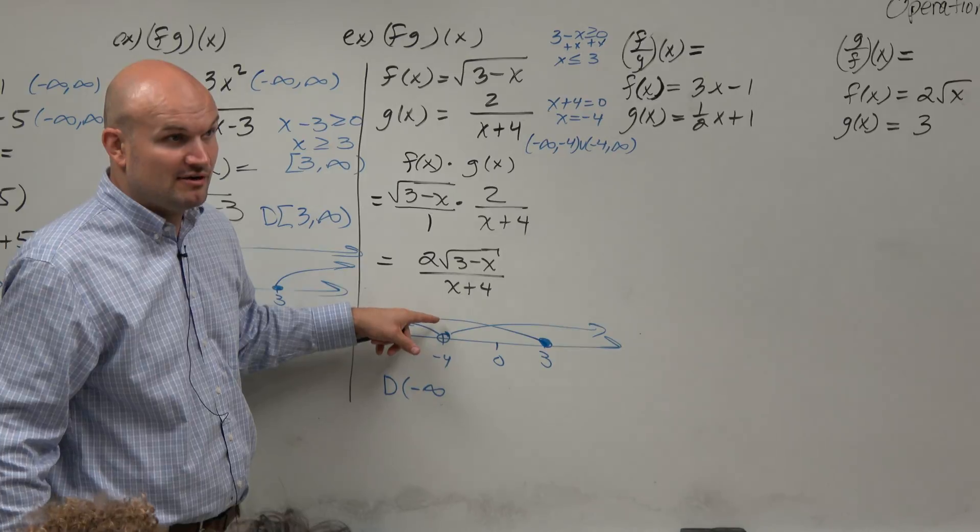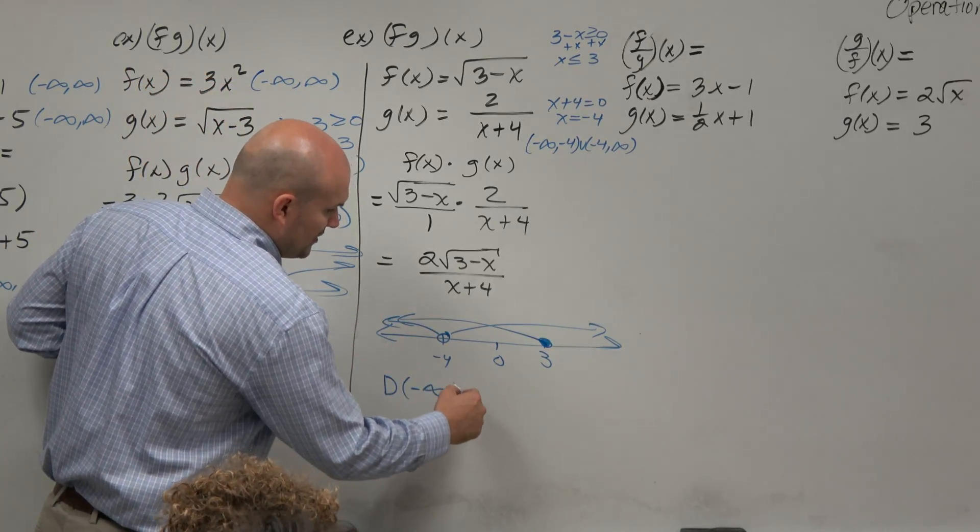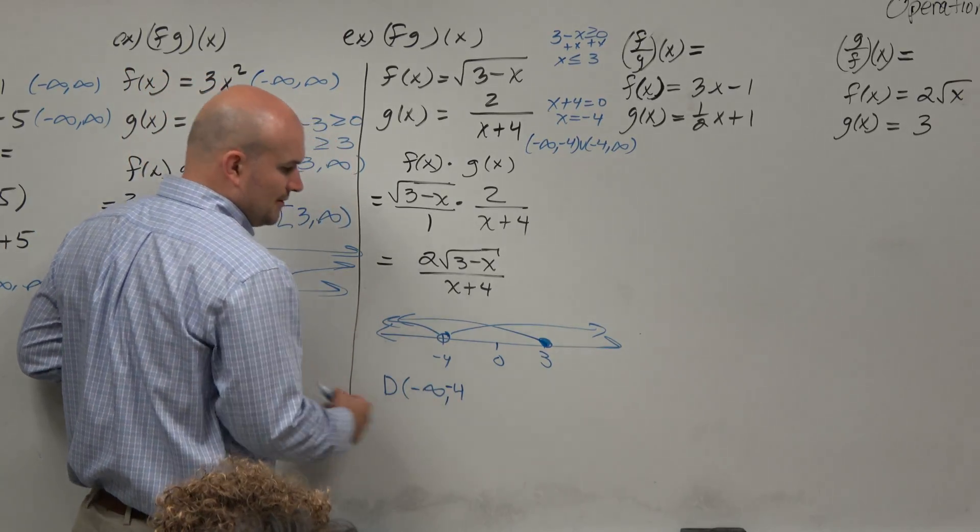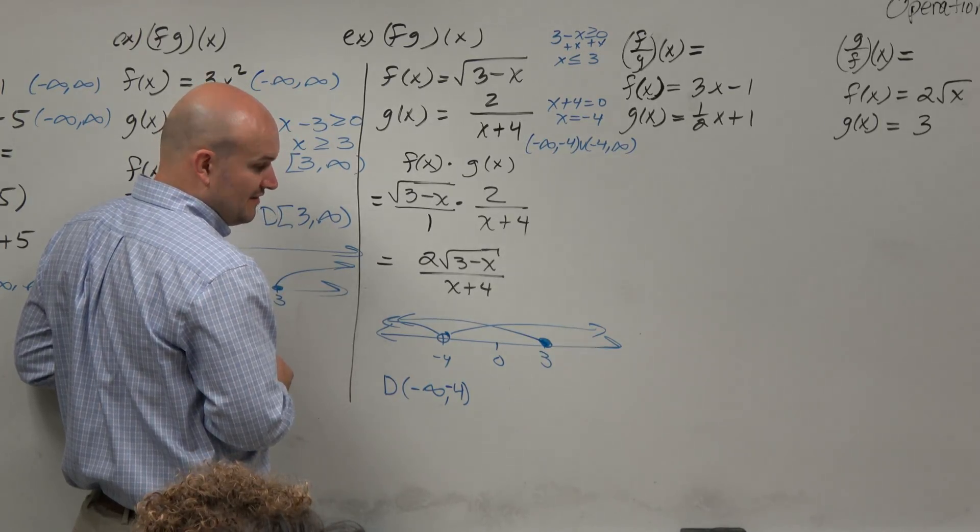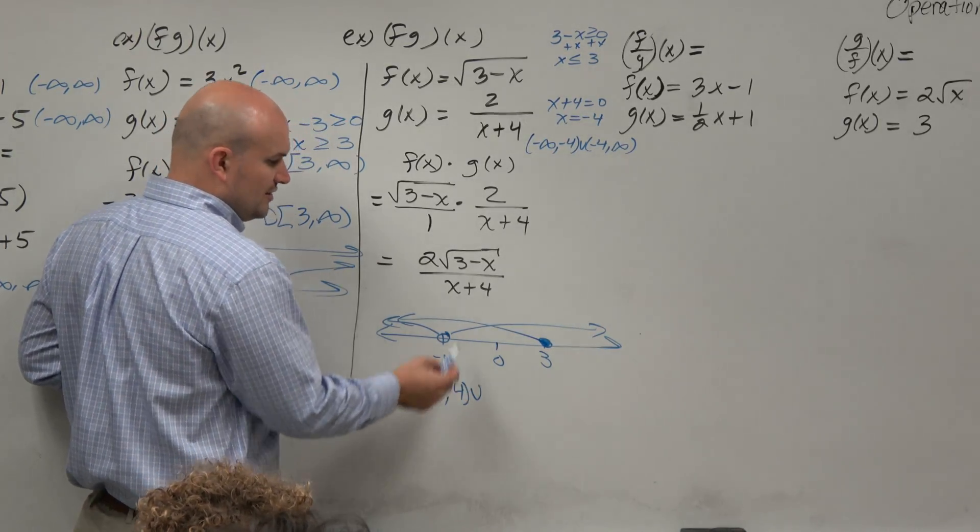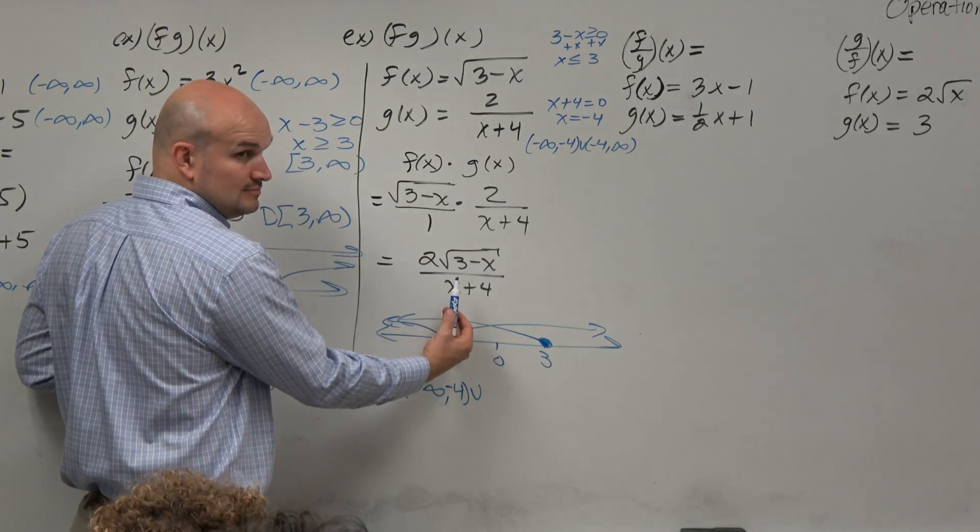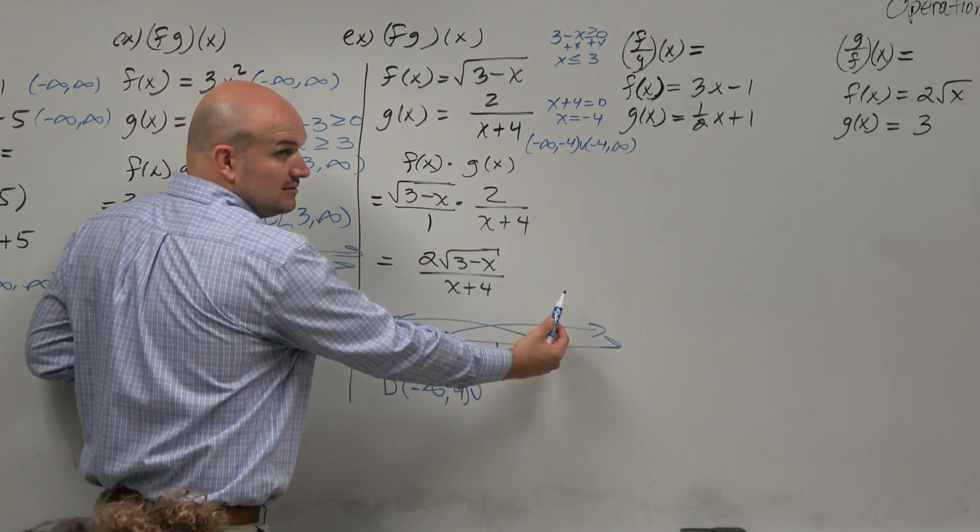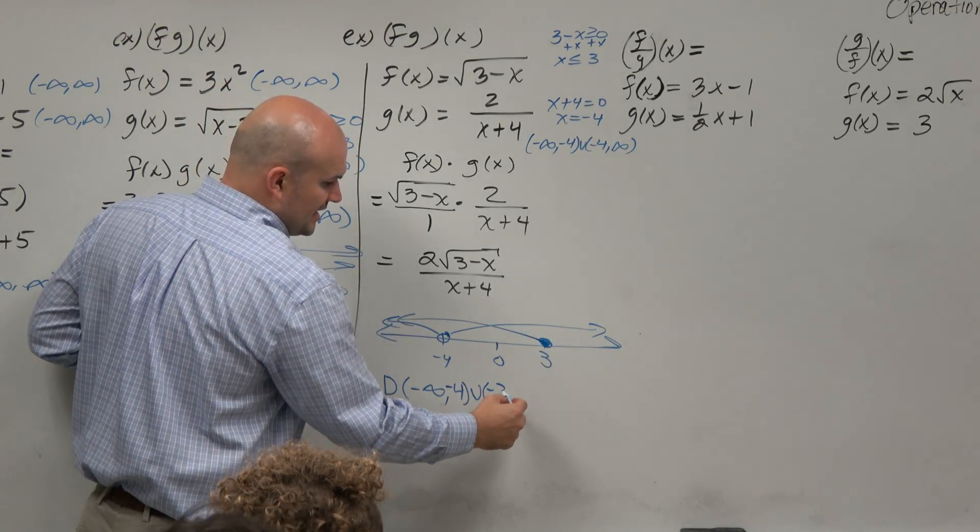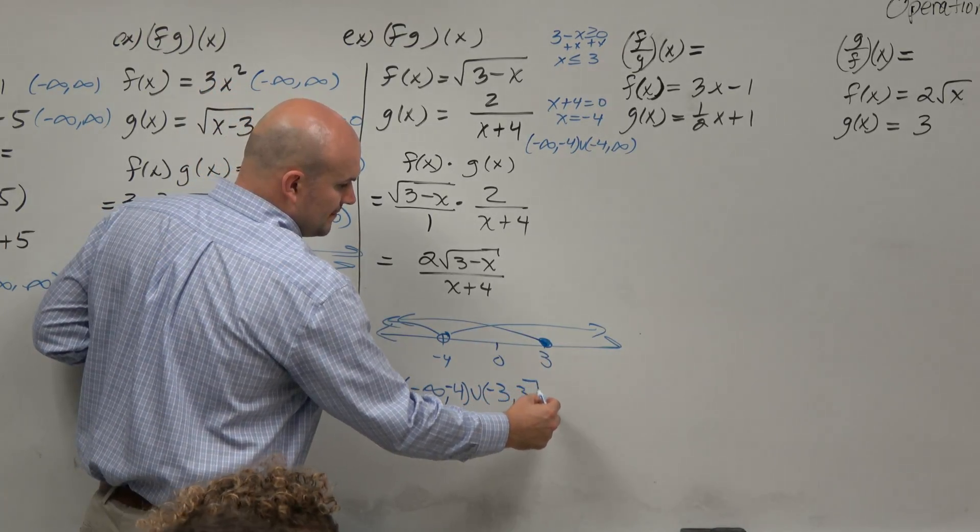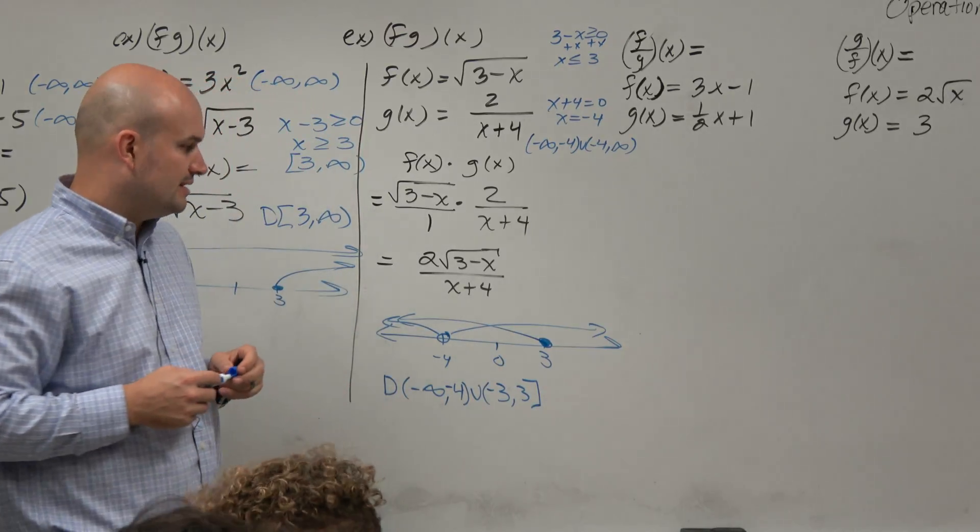And then are they both the same at negative 4? No, this one's undefined. This one's defined, right? So we've got to stop at negative 4. They don't have the same domain up to negative 4. So we stop at negative 4 because that's not the same for both of them, so it's going to be undefined. And then union, are they the same after negative 4? All the way up to 3, right? But after 3? No. So they're going to go from negative 4 to 3 with an end parenthesis.